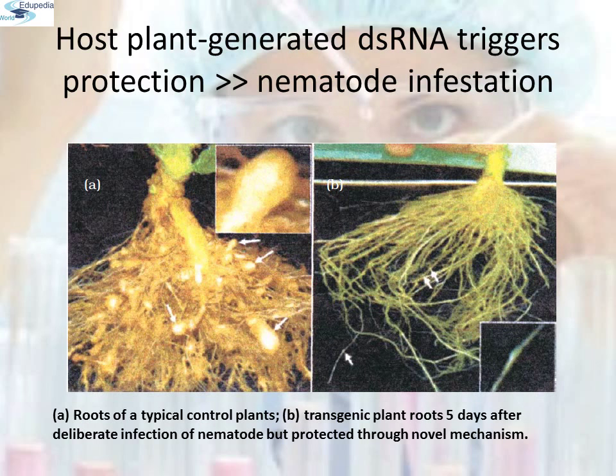This is a diagrammatic representation of host plant-generated double-stranded RNA triggering protection against nematode infestation. The first image (A) shows the root of a typical control plant. Image B shows transgenic plant roots five days after deliberate infection with the nematode, but protected through the RNAi mechanism.